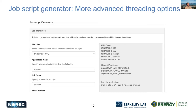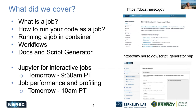I'll point out again the script generator on the MyNERSC page. If you know the threading options and other advanced options you want, the script generator helps you get those srun options into your script. To summarize: we covered what jobs are, how to make jobs, how to put code into jobs, running containers, and workflows. Check the NERSC docs and script generator, and come back tomorrow for Jupyter at 9:30 and job performance and profiling right after that. Thanks!